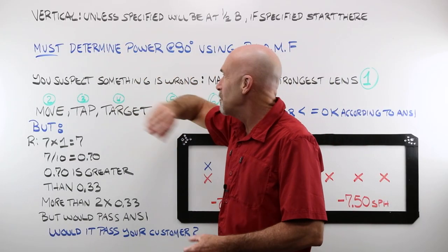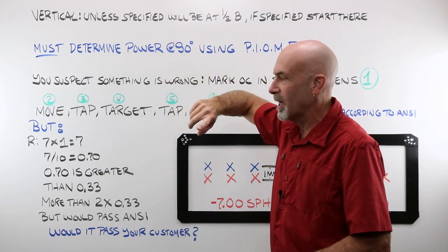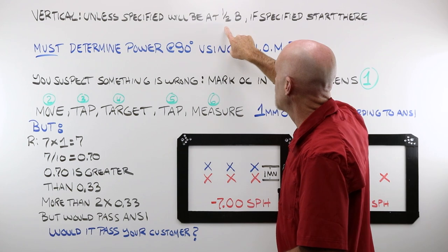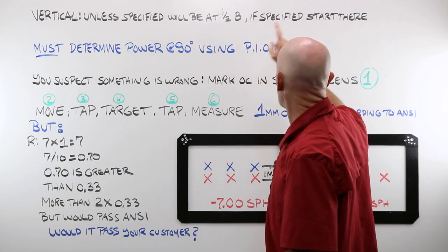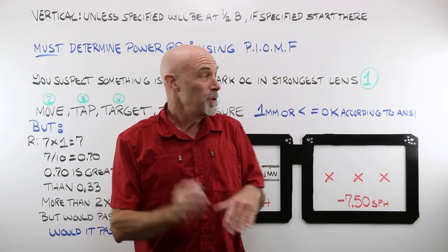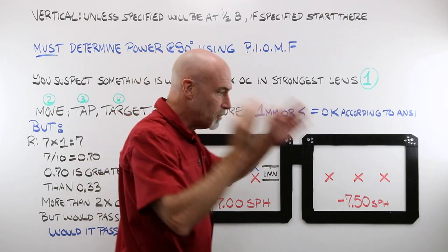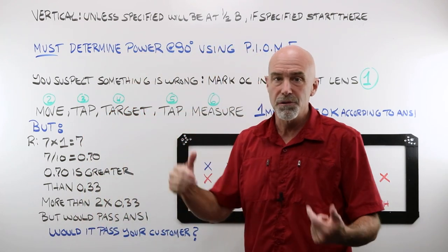For vertical, unless you specified an OC height, that will generally be at half the B. If you specified an OC height, well, you would start there. There's so much just to that one line. Let's move over to the other whiteboard and look at that. And then we'll come back here and run through the steps.